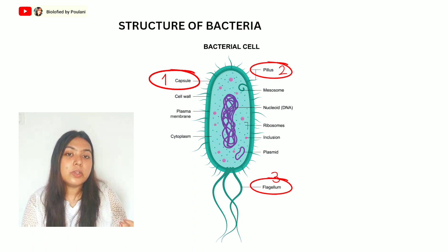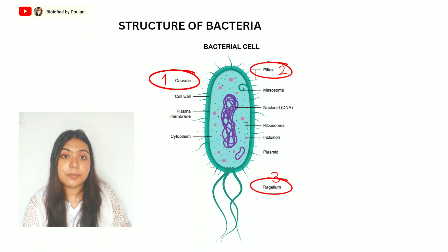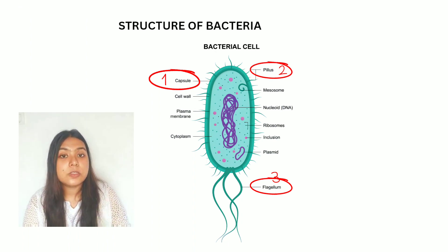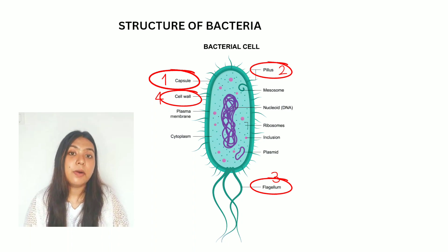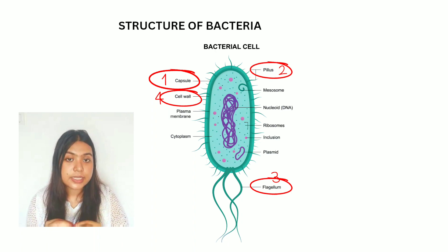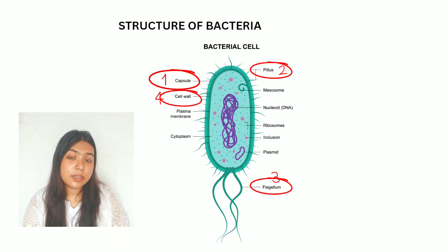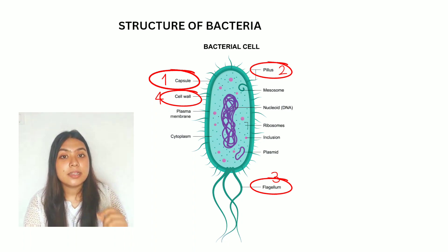Bacteria also have pili, fimbriae, and flagella, which help in their motility. The cell wall is made up of peptidoglycan, which is composed of NAG (N-acetylglucosamine) and NAM (N-acetylmuramic acid). This peptidoglycan composition is a characteristic feature of bacterial cell walls.